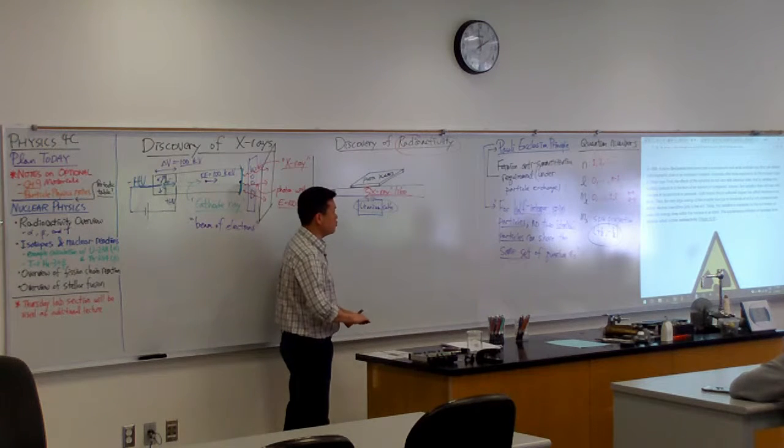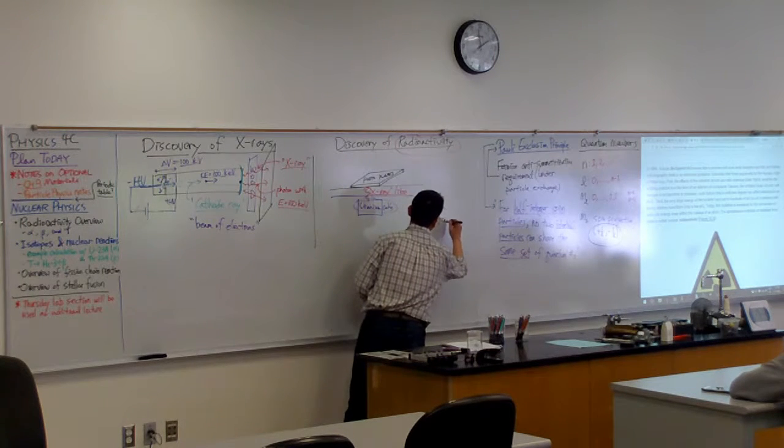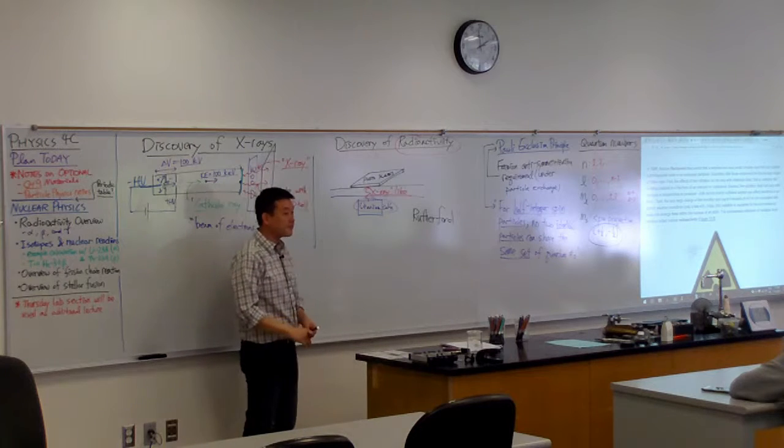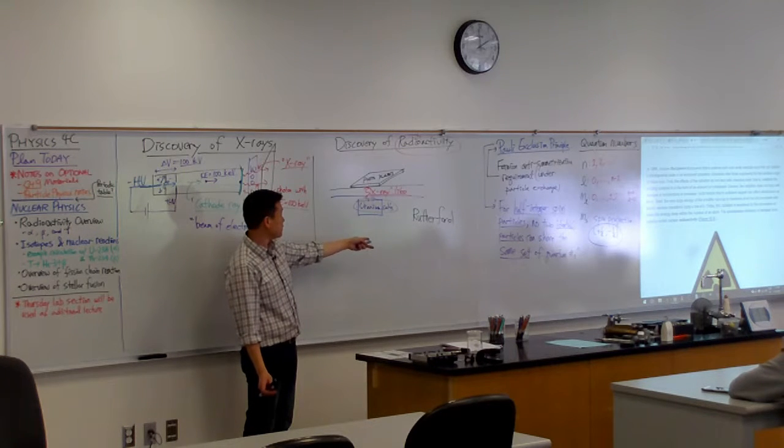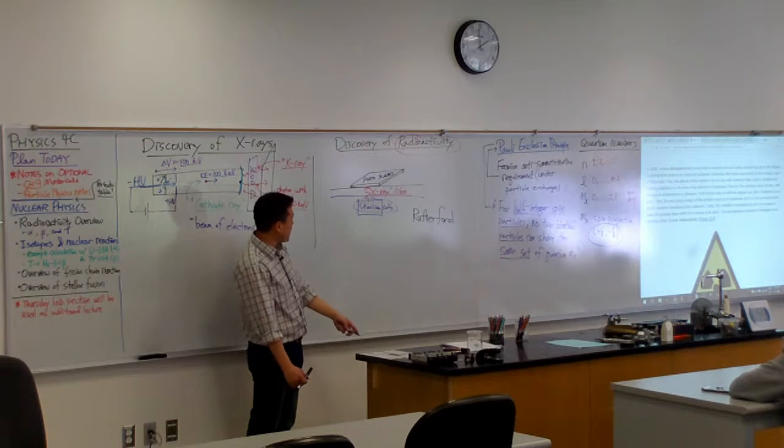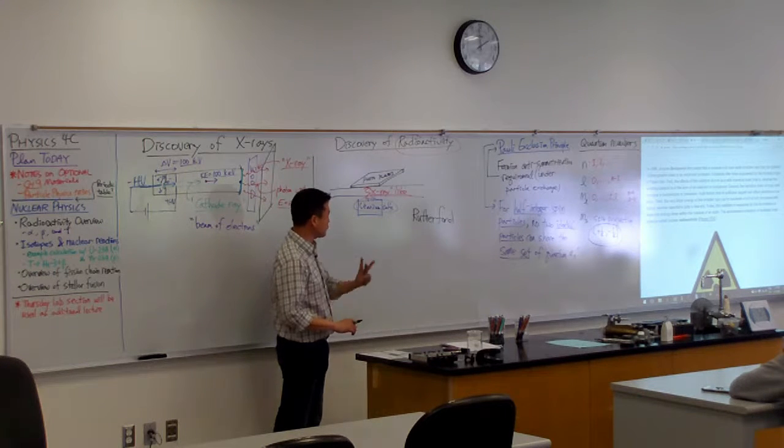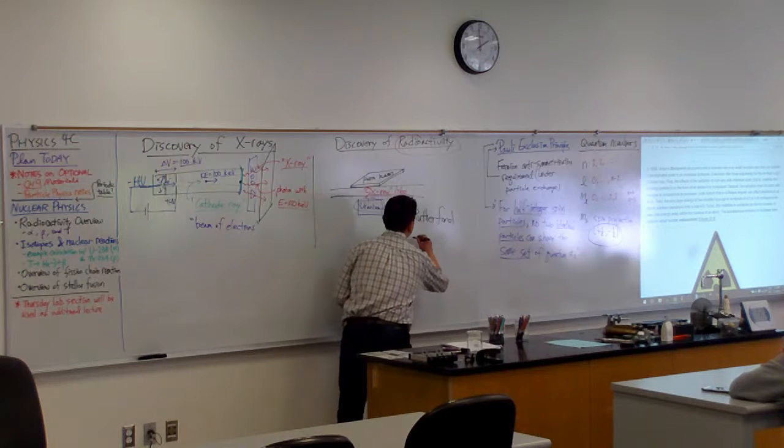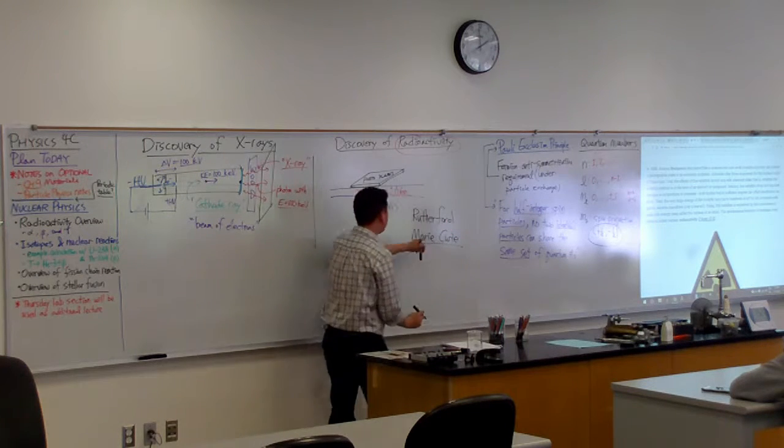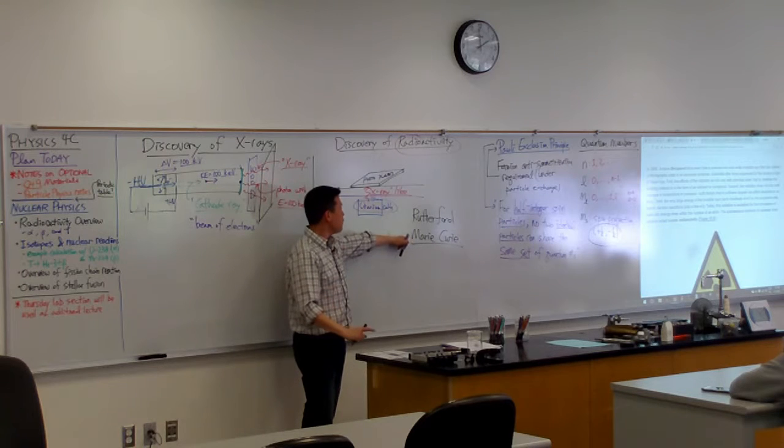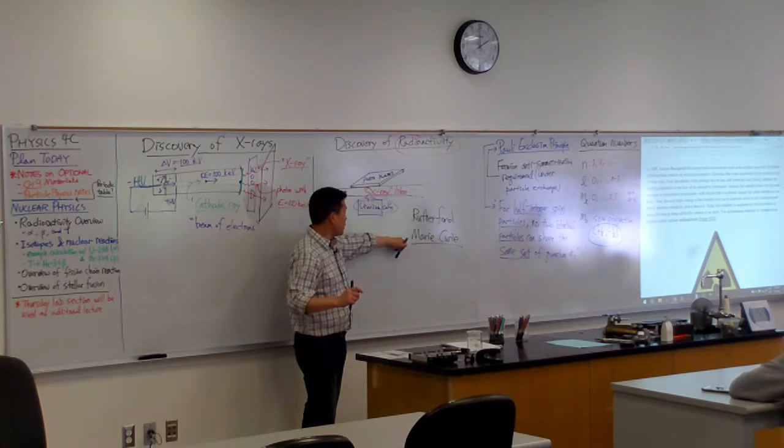I'll throw out some names so you know people who've done a lot of work in radioactivity. One is a guy named Rutherford. He's the one who did the Rutherford experiment. He used alpha rays there. Those alpha rays come from radioactivity. The other person is Marie Curie. She's one of the few people who have two Nobel prizes - one in physics, one in chemistry. She discovered a lot of radioactive elements.